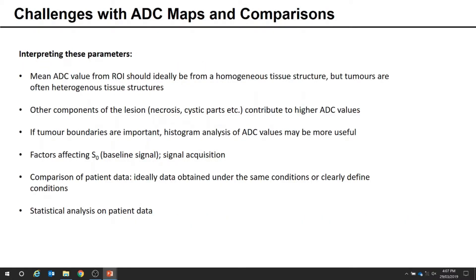The use of the mean ADC value is ideally for homogeneous tissues, but tumors are often heterogeneous with components such as necrosis and cystic parts that can contribute to higher ADC values. Another option is to do a histogram analysis of ADC values across the area of interest and compare changes in the distribution of those ADC values over time, instead of just using the global mean ADC.